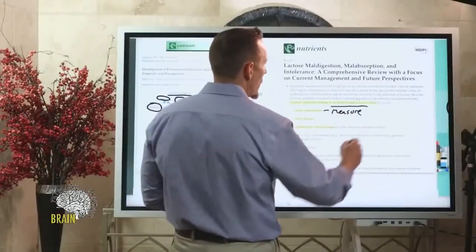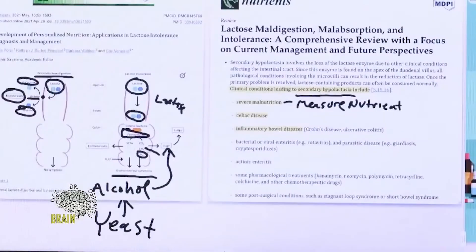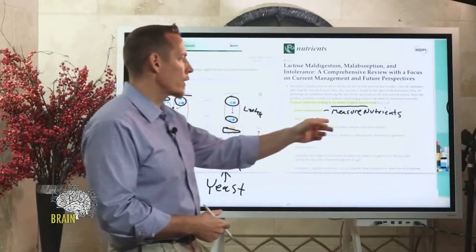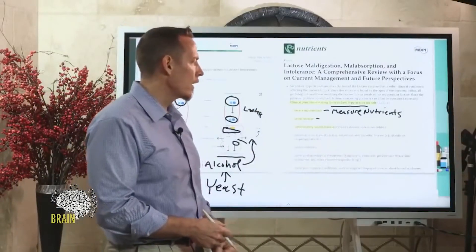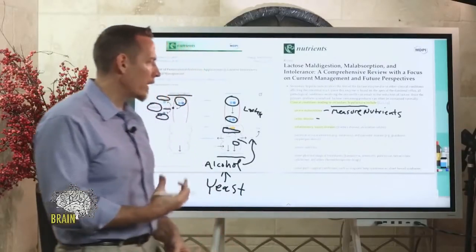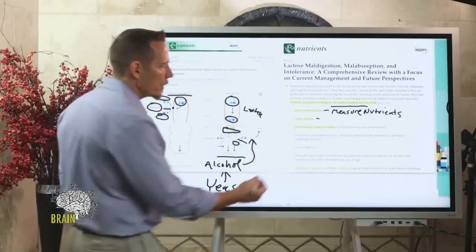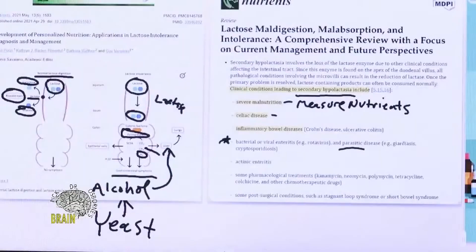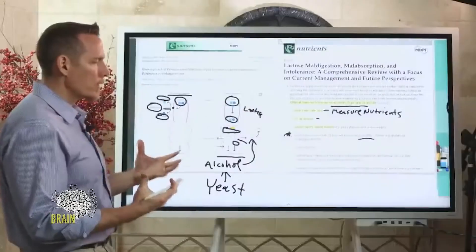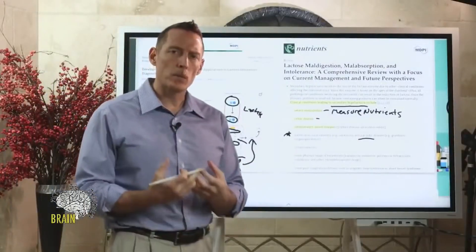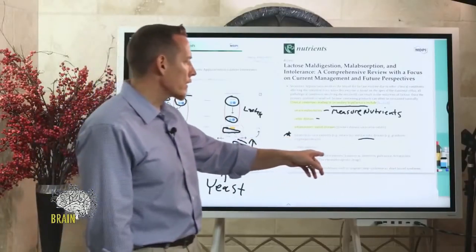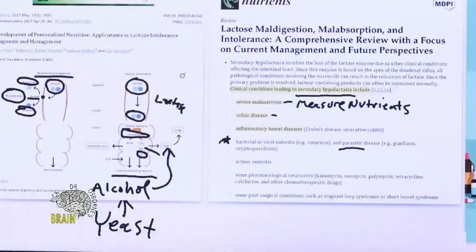Severe malnutrition can cause someone to develop lactose intolerance. Celiac disease is another cause — sometimes the only symptom of celiac is the development of lactose intolerance. Inflammatory bowel diseases such as Crohn's, ulcerative colitis, and regional colitis can also lead to this diagnosis. Additionally, bacterial, viral, and parasitic infections in the GI tract can damage the brush border, reducing the ability to produce the lactase enzyme.